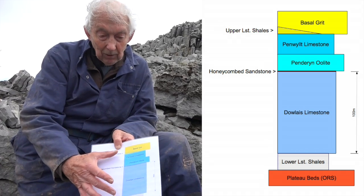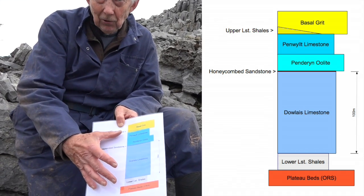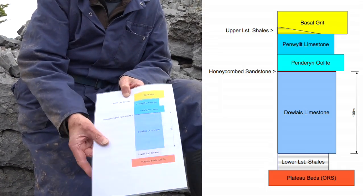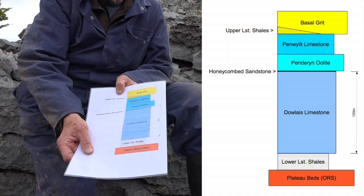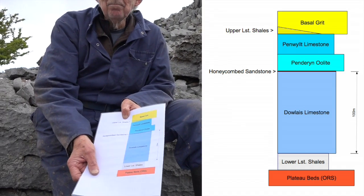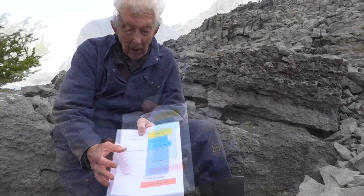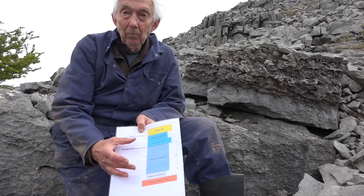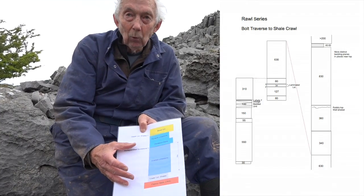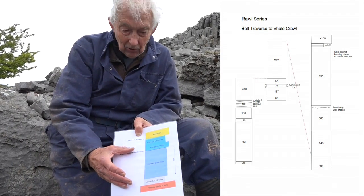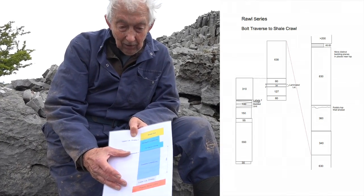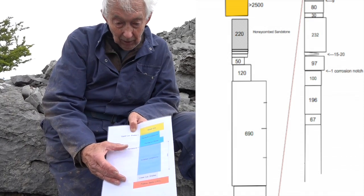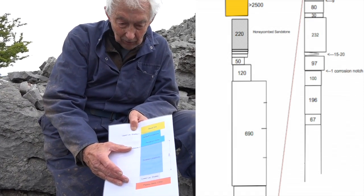The Carboniferous limestone is divided into formations, and these are discrete, easily recognizable parts of the sequence. They are a convenient mapping tool. The individual formations are made up of beds, which are the smallest units within the sequence. They range in thickness from a centimetre through to several metres.